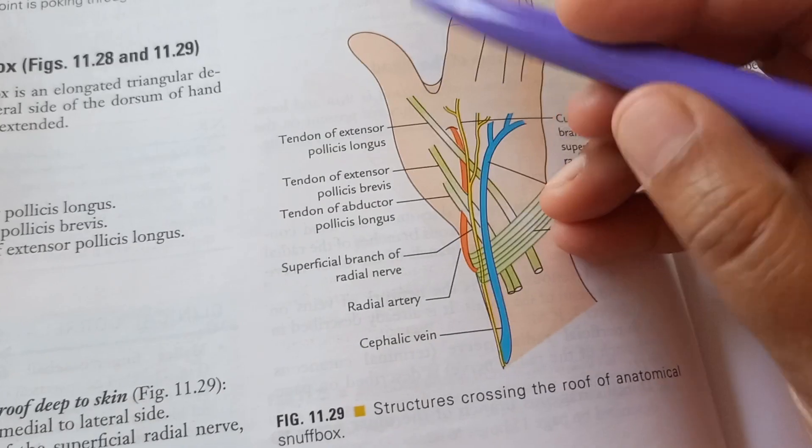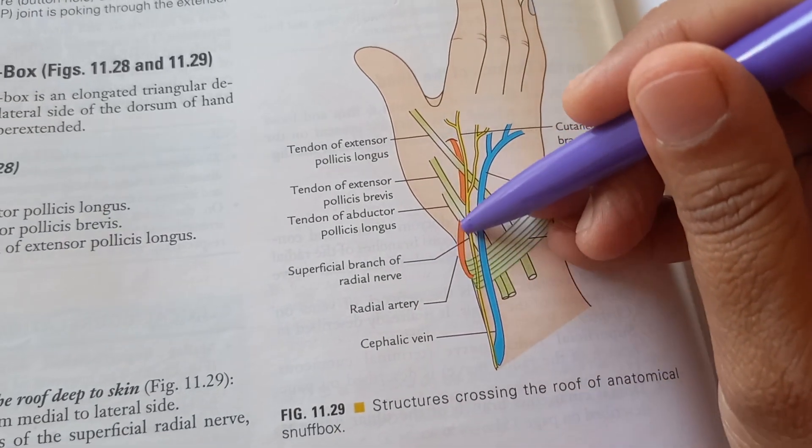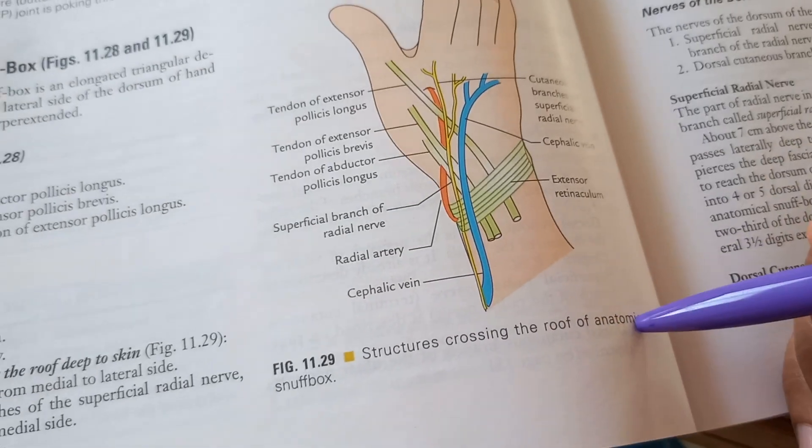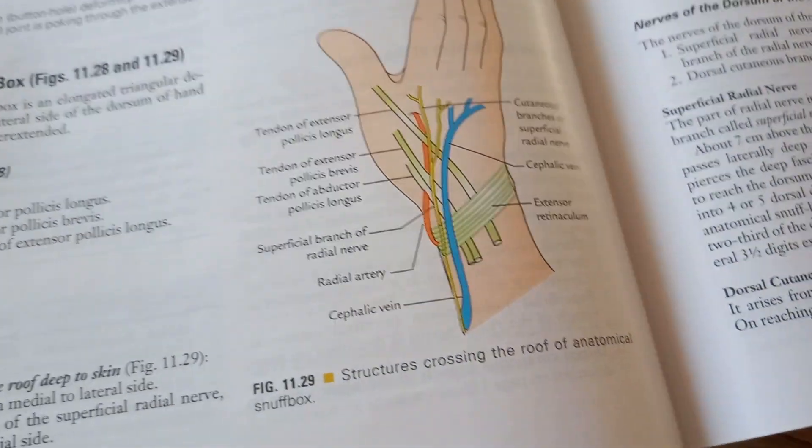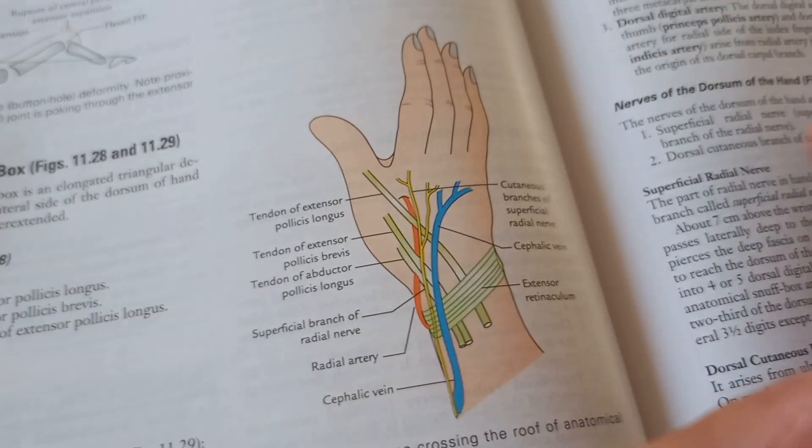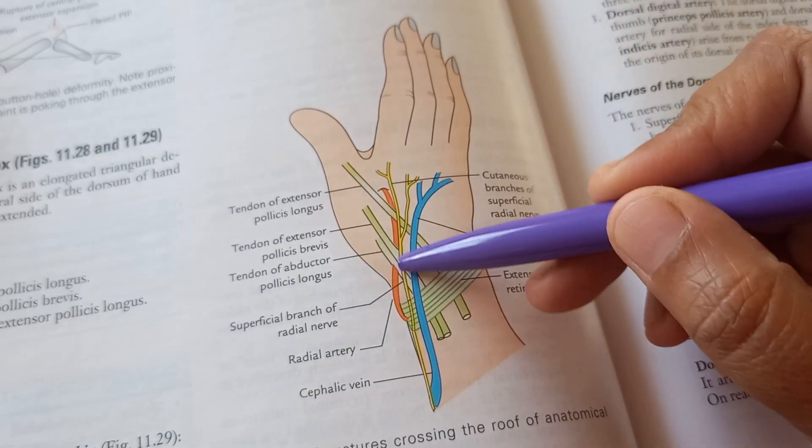So what do you see here? The radial artery. Radial artery. This is that snuff box. Yeah, anatomical snuff box. So here, this area of it. So you call it as the anatomical snuff box. The radial artery is there here.